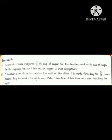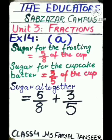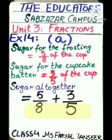Here is a cupcake recipe word problem. We need 5/8 cup of sugar for the frosting — the cream we use to decorate — and 3/5 cup of sugar for the cupcake batter. How much sugar is that altogether? The word 'altogether' means we are going to do addition. Sugar altogether = 5/8 + 3/5. The denominators 8 and 5 are not equal, so we will find the LCM.